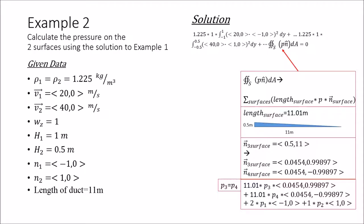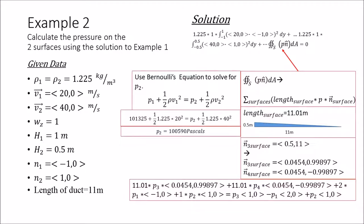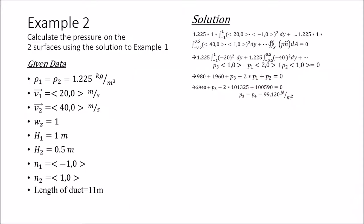From here we input the equation for the pressure part of the momentum equation, taking into account the pressures P1 and P2 at the inlet and outlet. To solve for these pressures we use Bernoulli's equation, since we know V1 and V2 and we assume P1 is atmospheric pressure. Under this assumption we solve for P2, which gives us 100,000 pascals. We then input P1 and P2 into the momentum equation and solve for P3 and P4, which are equal by symmetry. Using these assumptions, the pressure on the walls is 99,000 pascals.